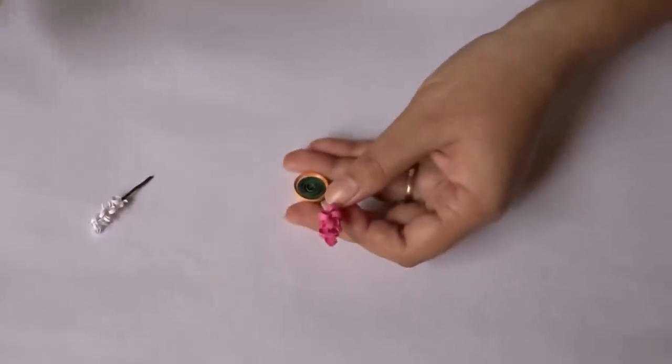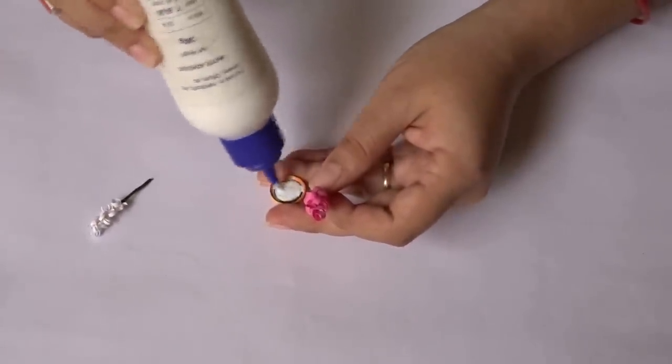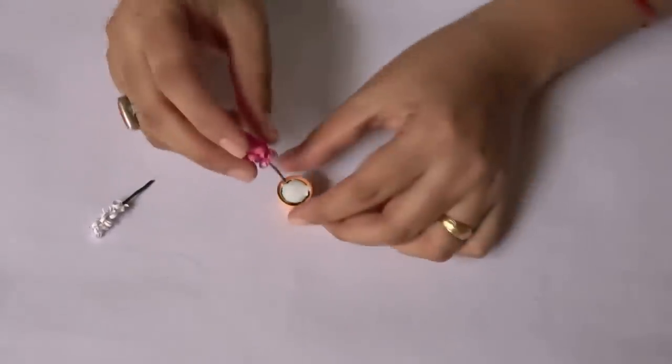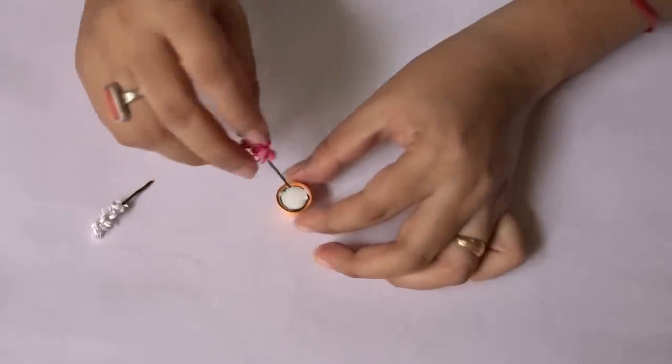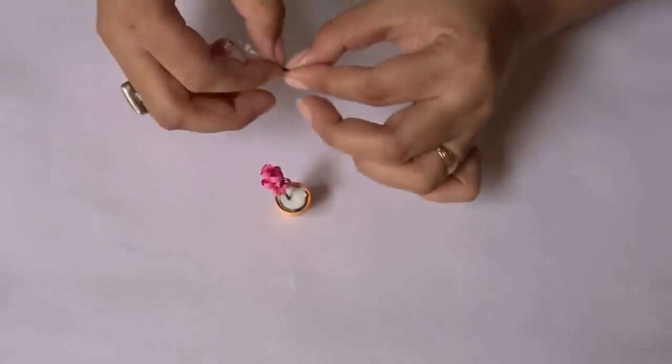Now apply some glue on the quill and bend the flower a little bit. Then place it here. Do the same with the others.